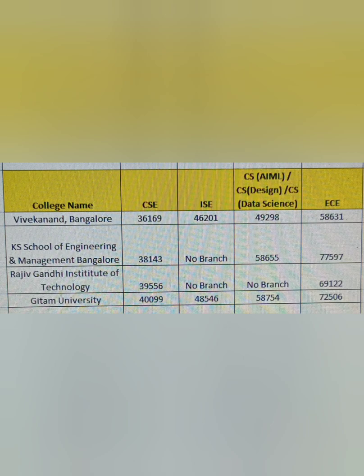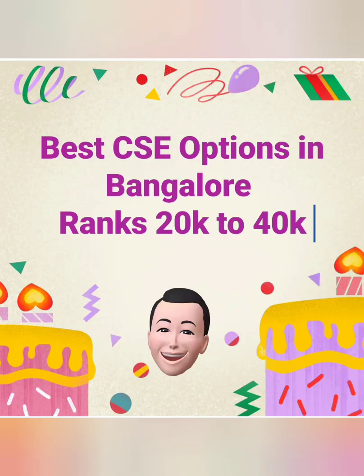Going further beyond this, Vivekananda Institute of Technology has CSE at 36,000, KS School of Engineering at 38,000, Rajiv Gandhi at 39,000, and Gitam at 40,000. I'll cover colleges with CSE available between 40,000–60,000 ranks in the next video. ISE is again available up to 48,000, computer-related specializations up to 58,000–59,000, and ECE up to 77,000. If your rank is beyond 50,000–70,000, ECE remains a viable option.